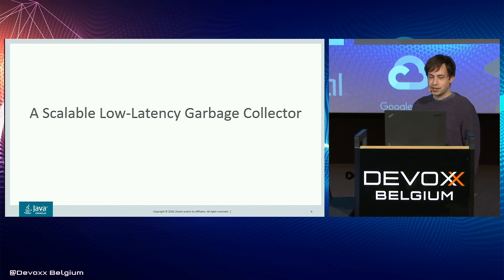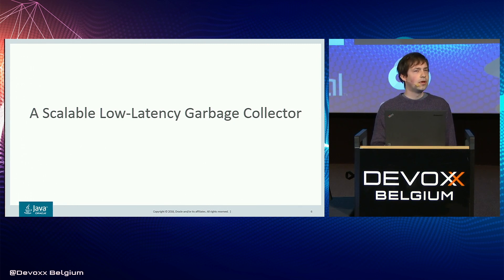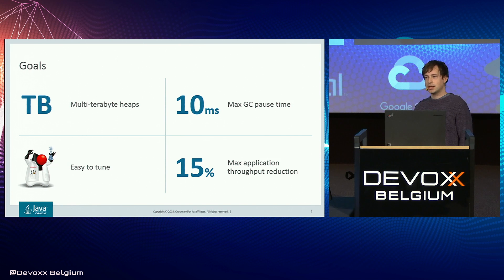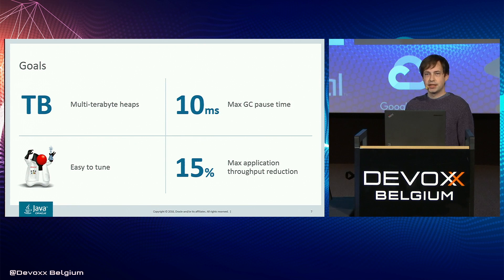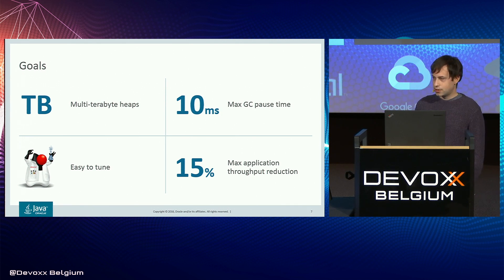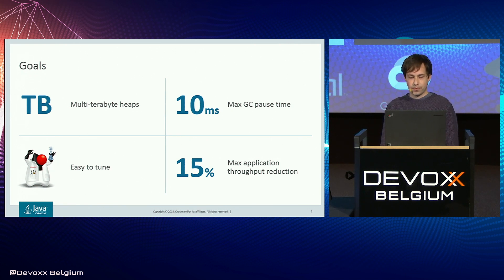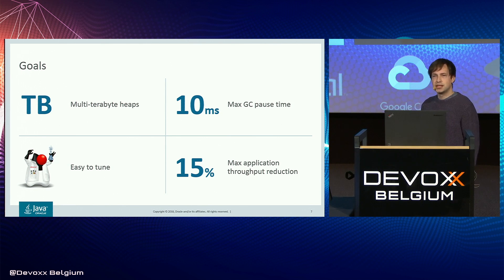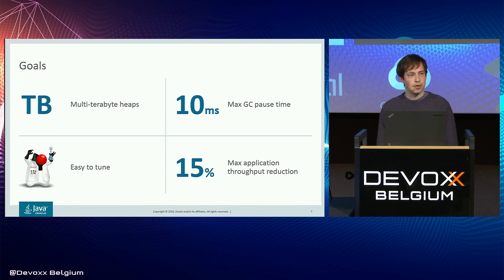The main goal is to have a scalable, low latency garbage collector. We are aiming at being able to run workloads with multi-terabyte heaps and still maintain GC pause times no longer than a maximum of 10 milliseconds, and for this we're not willing to pay more than 15% throughput overhead. In practice, we perform typically a lot better both in terms of throughput and pause times. Another goal we take very seriously is that we want this garbage collector to be as easy as possible to tune — we don't want 500 JVM flags that nobody understands.